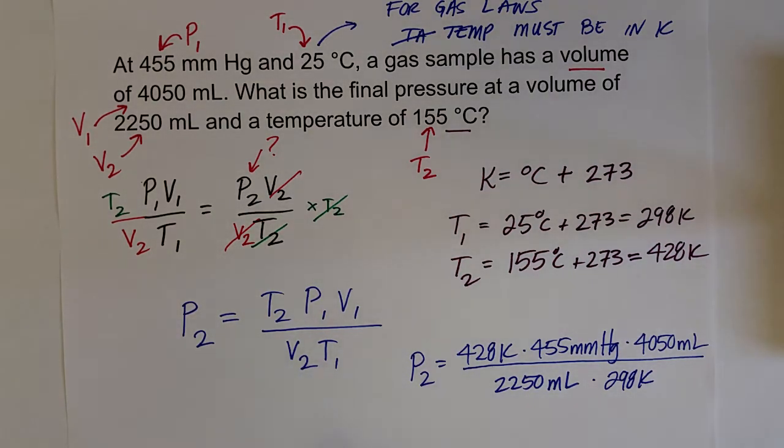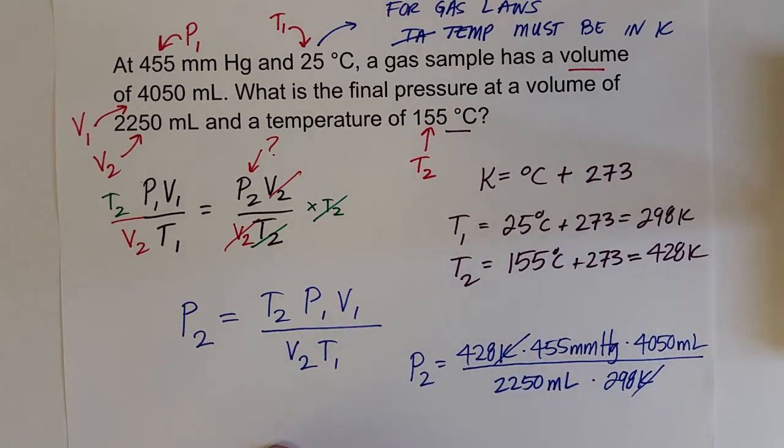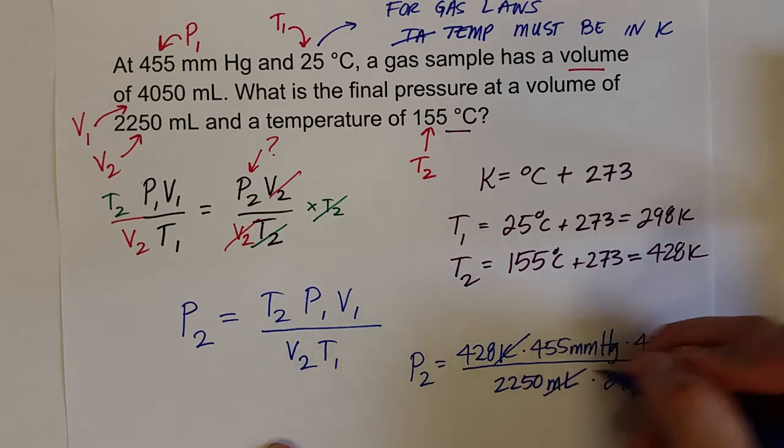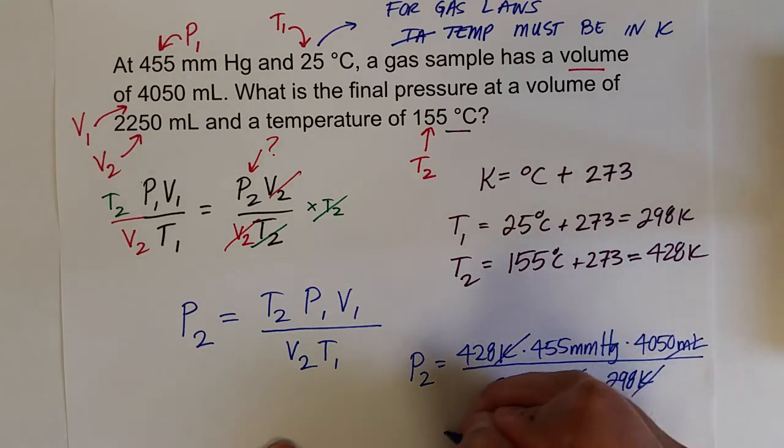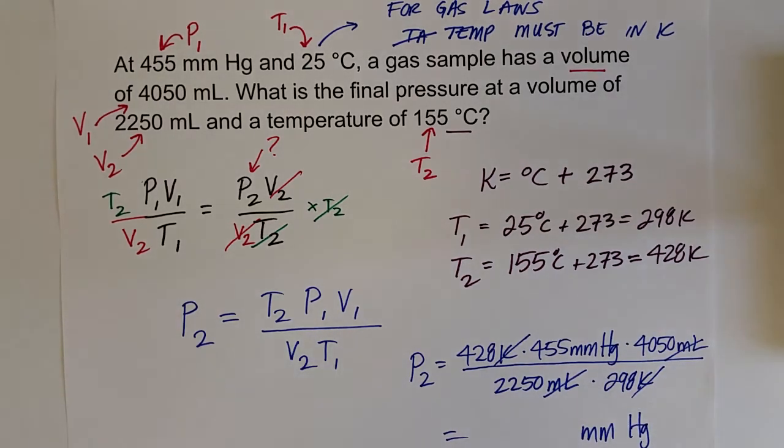Okay, one way we can make sure we did our algebra correctly is by making sure our units cancel and giving us the units that would make sense for pressure. So Kelvin cancel, milliliters cancel. And so we're left with units of millimeters of mercury, which are units for pressure.